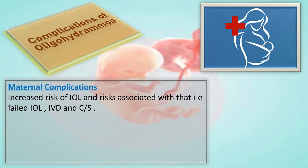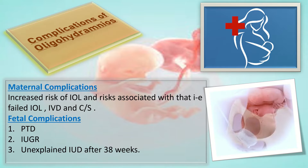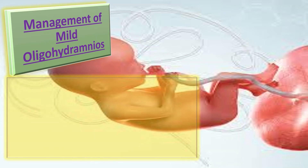The possible complications of oligohydramnios include maternal and fetal complications. Maternal complications include increased risk of induction of labor, failed IOL, instrumental vaginal delivery, and cesarean section. Fetal complications include preterm delivery, intrauterine growth retardation, and unexplained intrauterine death after 38 weeks of gestation.